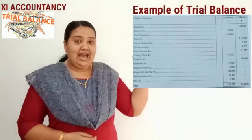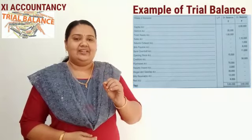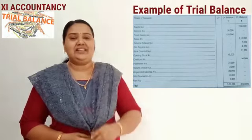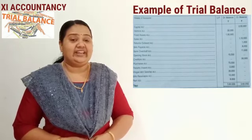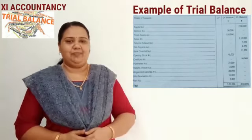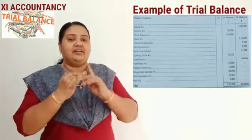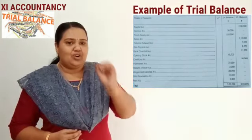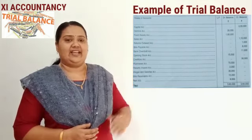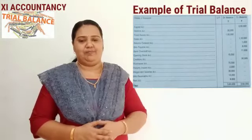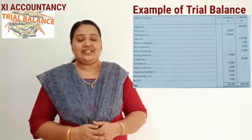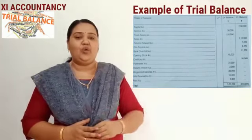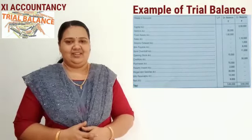These are written on the debit balance column because they are either assets or expenses accounts. Capital account, revenue account, and liabilities accounts are written on the credit side — that means the balances of capital account, return outward account, bills payable account, bank overdraft account, and creditors account are written in the credit balance column, because these accounts are either capital, revenue, or liabilities accounts.